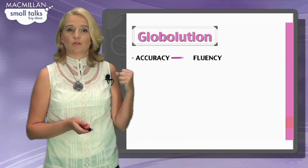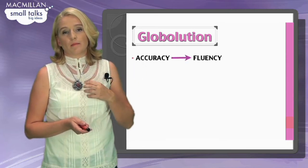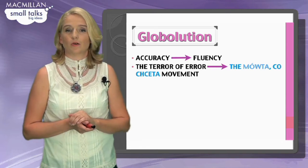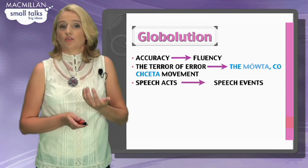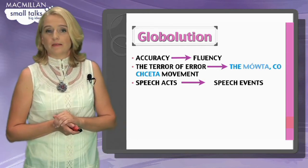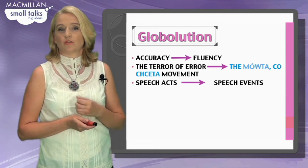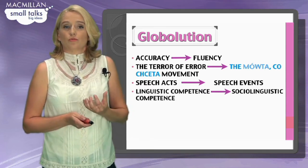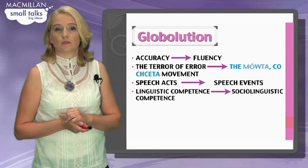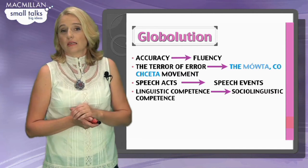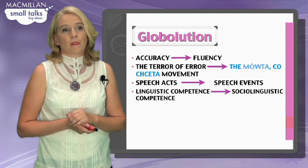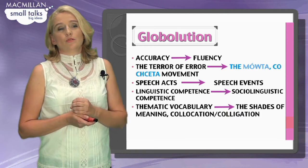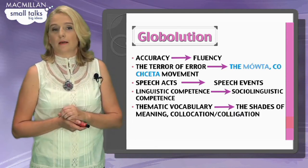First of all, a shift from accuracy to fluency. The next one: from looking at errors as something very important to the so-called Mufta Toseta movement — a term I coined. From speech acts where students were taught to give speeches, to what we now call speech events, in which students participate in all kinds of exchanges in English: conversations, YouTube videos — they produce English for different purposes. From linguistic competence to more sociolinguistic competence, which includes things like politeness and context.